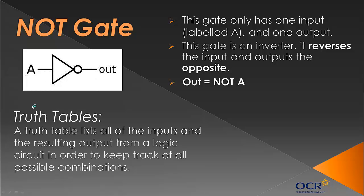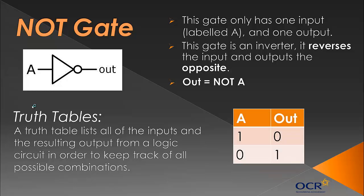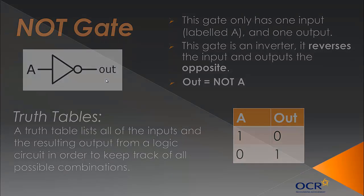So a truth table, this will make sense in a minute, a truth table lists all of the inputs and the resulting output from a logic circuit in order to keep track of all possible combinations. So a truth table will basically have a column for all the inputs and a column for an output, and it will list all possible combinations. So here the only two possible combinations are 1 and 0, because we've only got two options. We're looking at binary, true or false, two options and two outputs for each input. So basically, it does the opposite. So if the input is 1, we're going to get the opposite, which is 0. If it's true, it's false. If it's false, then it's made true. It basically just does exactly the opposite of your input. Fairly simple, I think.